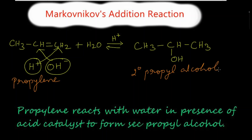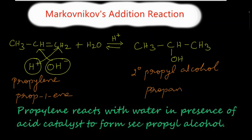Now we shall write the IUPAC name for this compound. Propylene is also known as propene — prop-1-ene — because the double bond is present at the first carbon. The product has three carbons in the straight chain, so propane; the OH group is attached to the second carbon, so the suffix is '-ol'. Therefore, the IUPAC name for this compound is propan-2-ol.